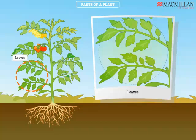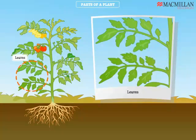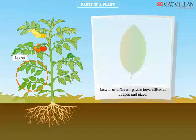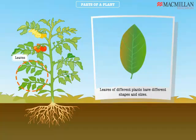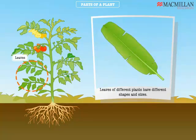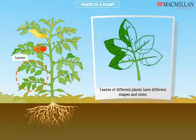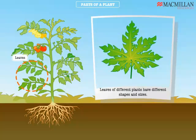These flat, green parts are the leaves. Most plants have green leaves. Plants make their food in the leaves. Leaves of different plants have different shapes and sizes. Oh, what a variety!